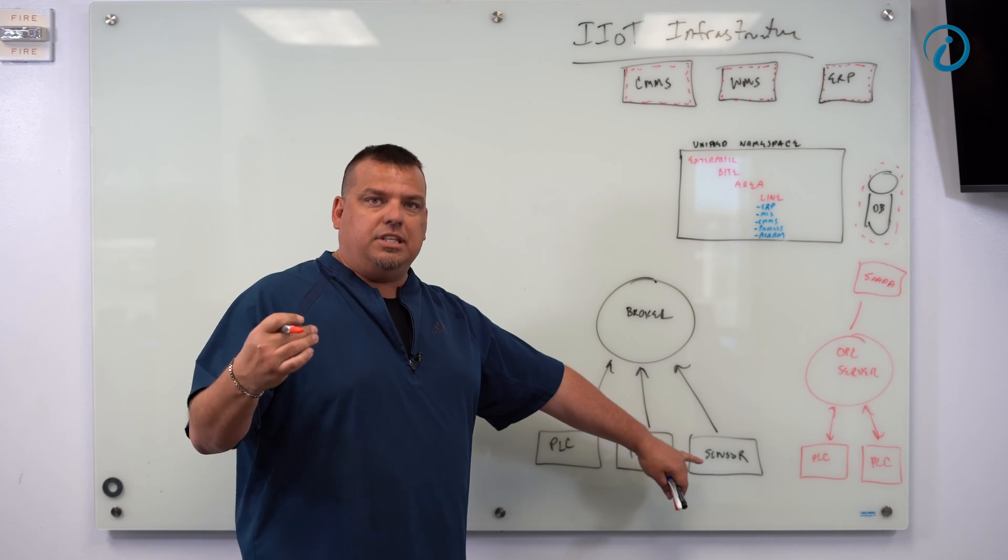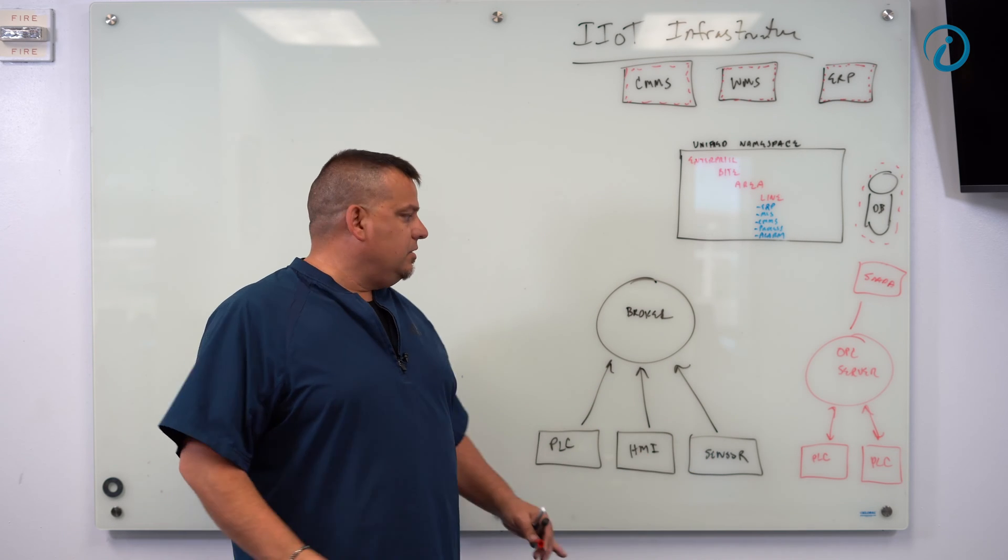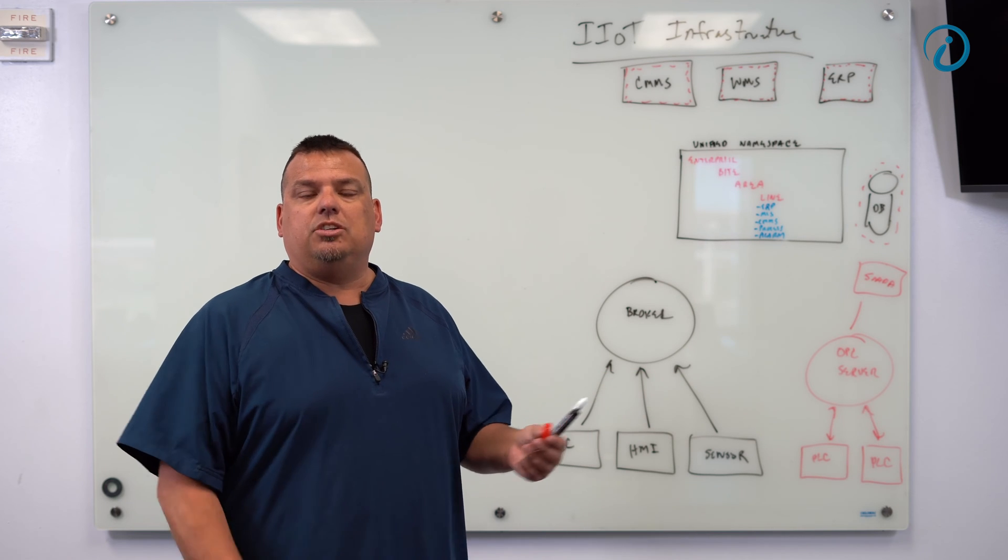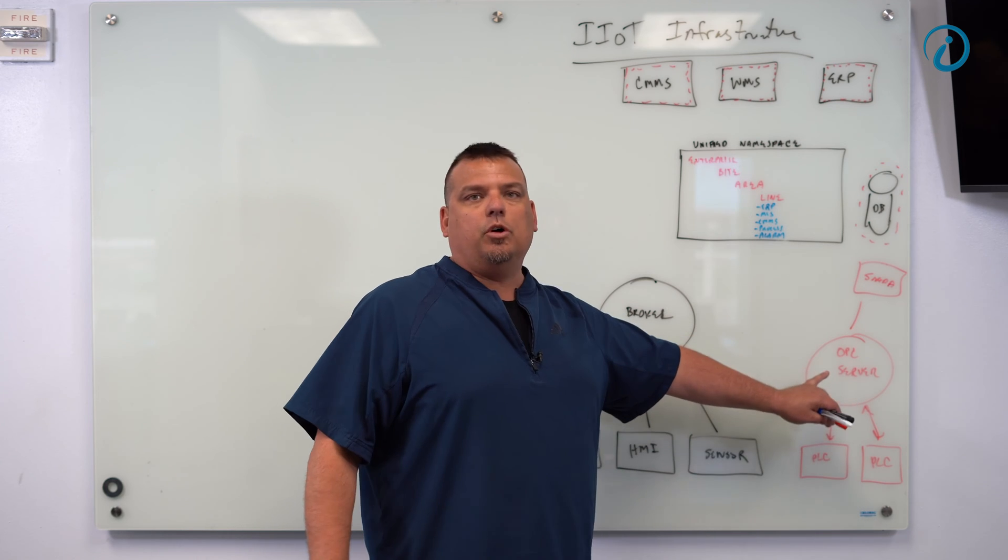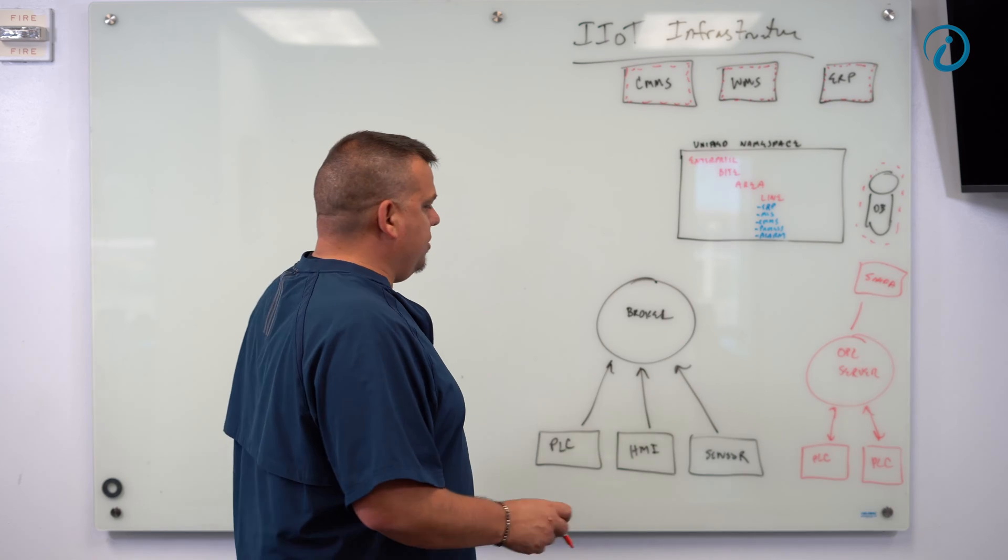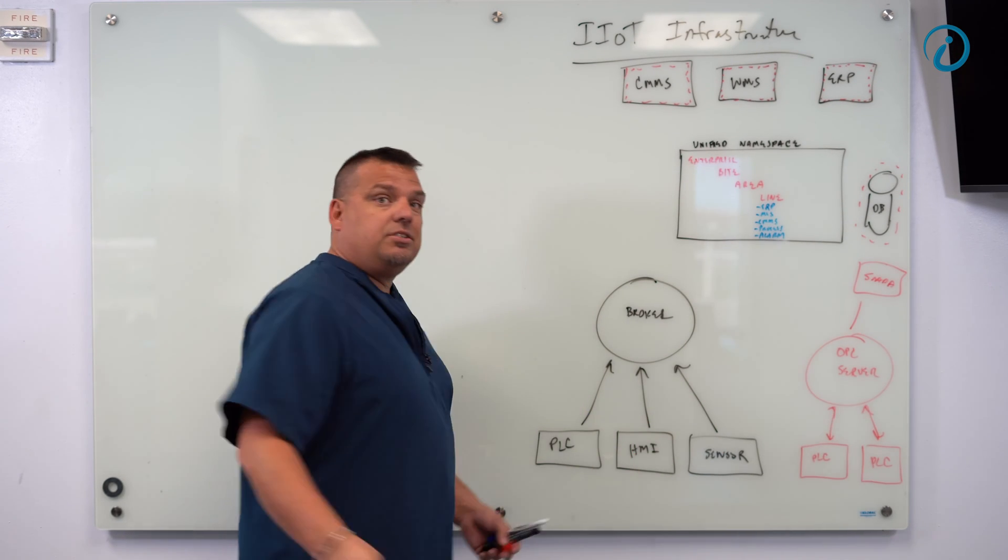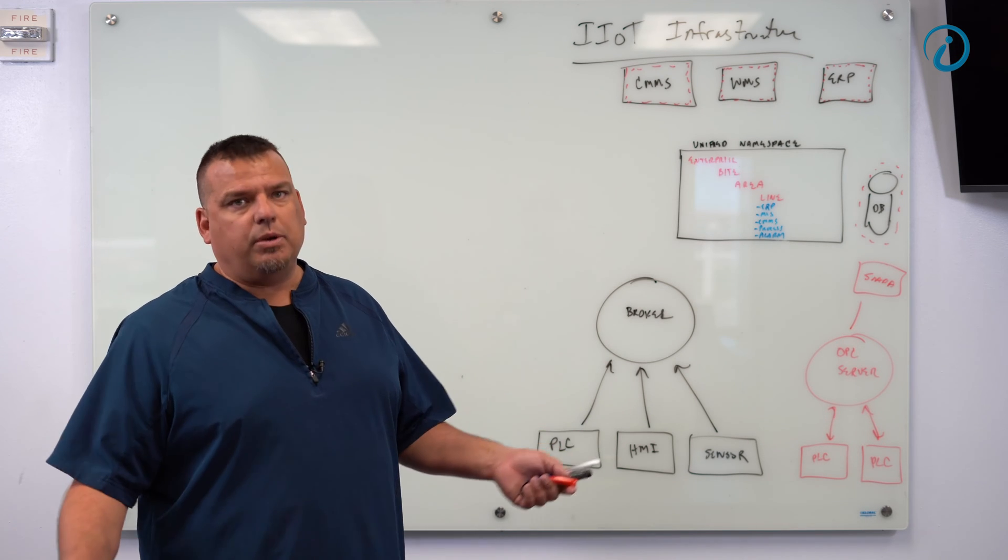They may have IIoT-supported PLCs, HMIs, and sensors. So that is a sensor that's a smart sensor that can report its information to an MQTT broker without having to be wired into a PLC and then routed through an OPC server. Because remember, this is all poll response. It's legacy technology. So they may have smart sensors, or we may install them. They may have smart HMIs, or we may install them. And they may have IIoT-supported PLCs, or we may install them.